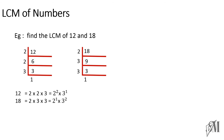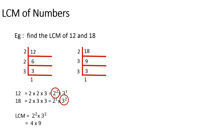The next step is to find out the highest powers of each factor. Here we have two factors: 2 and 3. The highest power of 2 is 2 squared and the highest power of 3 is 3 squared. So the LCM equals the product of the two highest powers: 2 squared into 3 squared equals 4 into 9, which is 36. The LCM of 12 and 18 is 36.